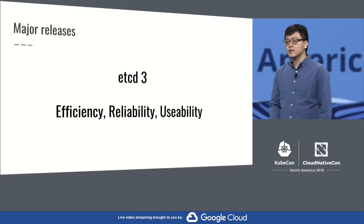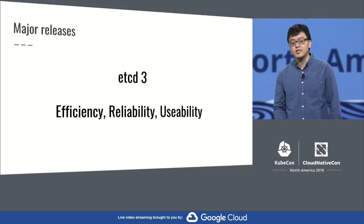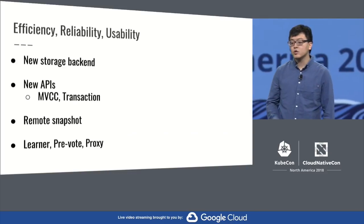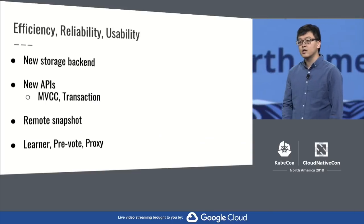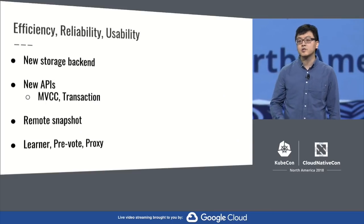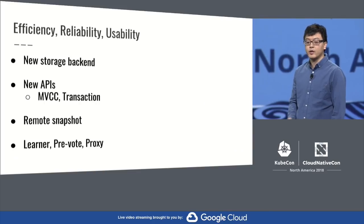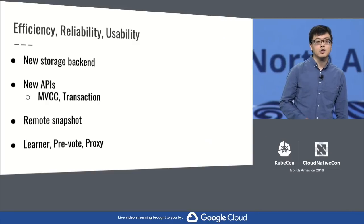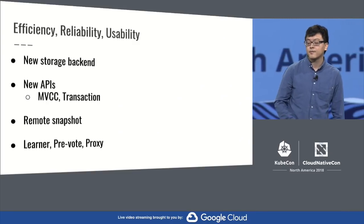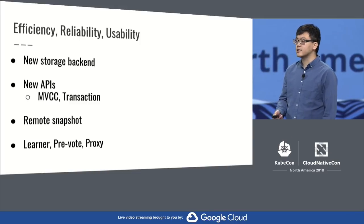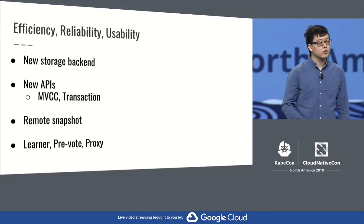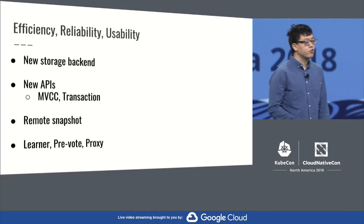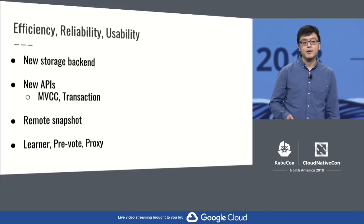etcd 3 is our current release, which focuses on efficiency, reliability, and usability. A new storage backend is developed for etcd 3 to support incremental snapshots, which allow users to store millions of keys into etcd efficiently and reliably. Multi-version concurrency control and transactions are also introduced into this release to simplify application development. Remote snapshot is also added for disaster recovery. The team is working on new exciting features like Learner, PreVote, and Proxy, to further enhance etcd's reliability and usability.